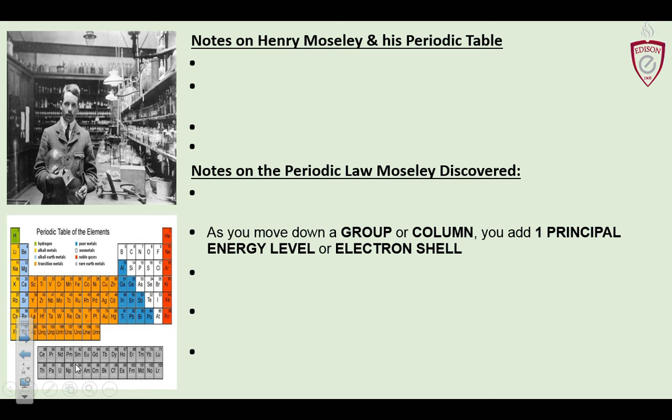As you move down a group or column, you add one principal energy level — one shell of electrons. Think of it as another layer of clothes. We practiced this with Bohr diagrams: if an element has three numbers in its sequence, it has three shells of electrons and it's in period three of the periodic table.